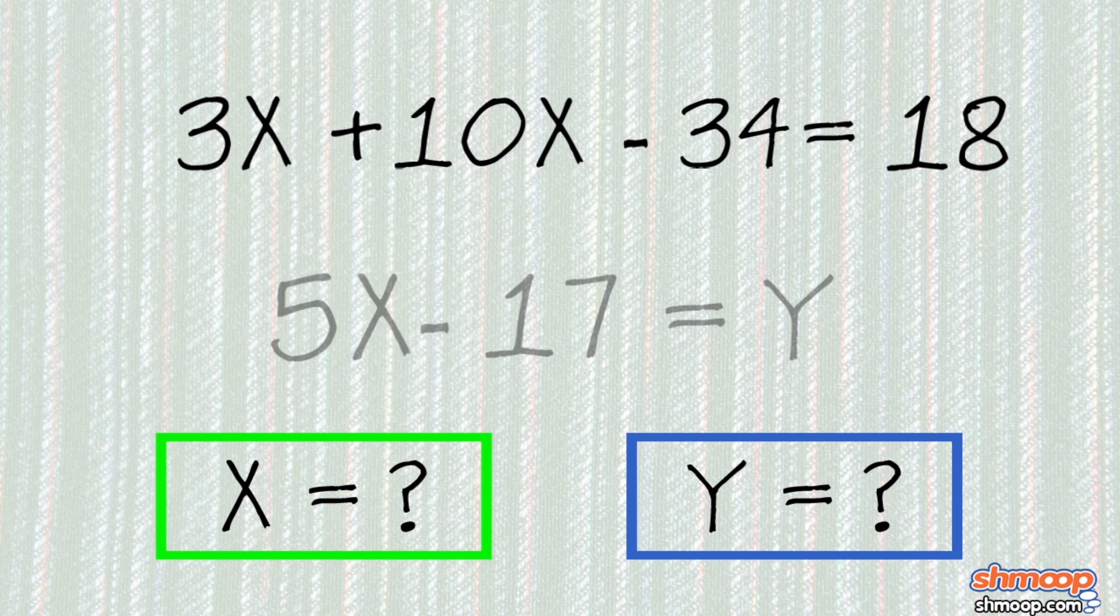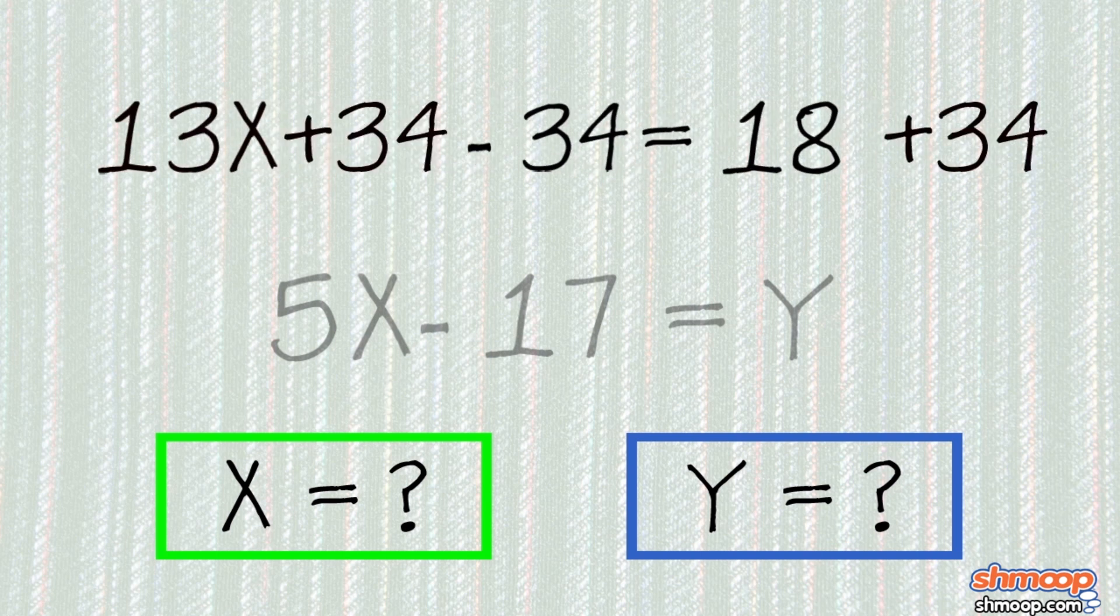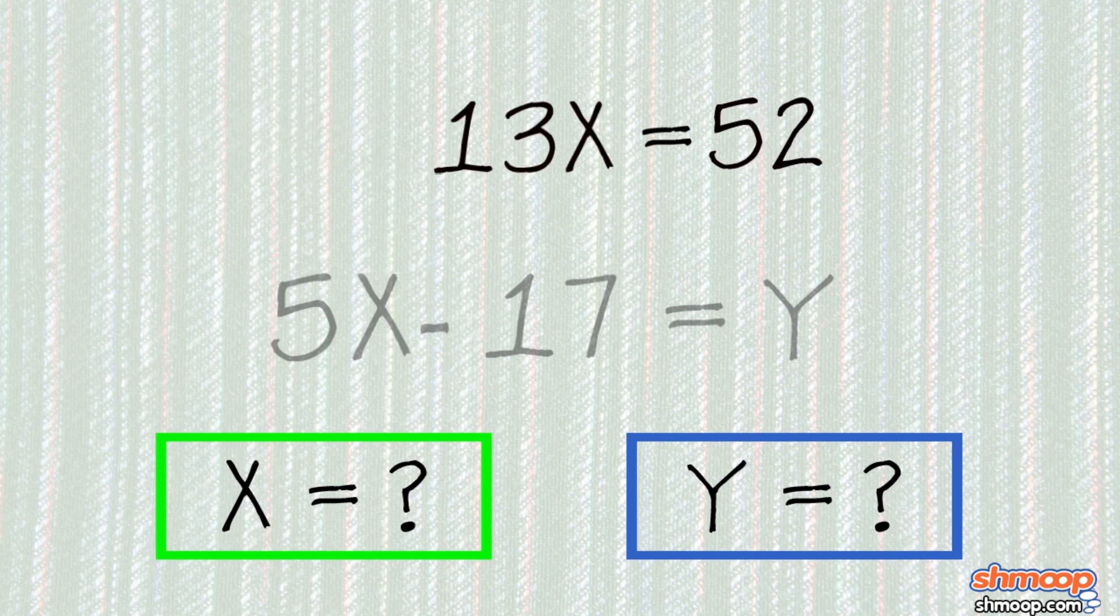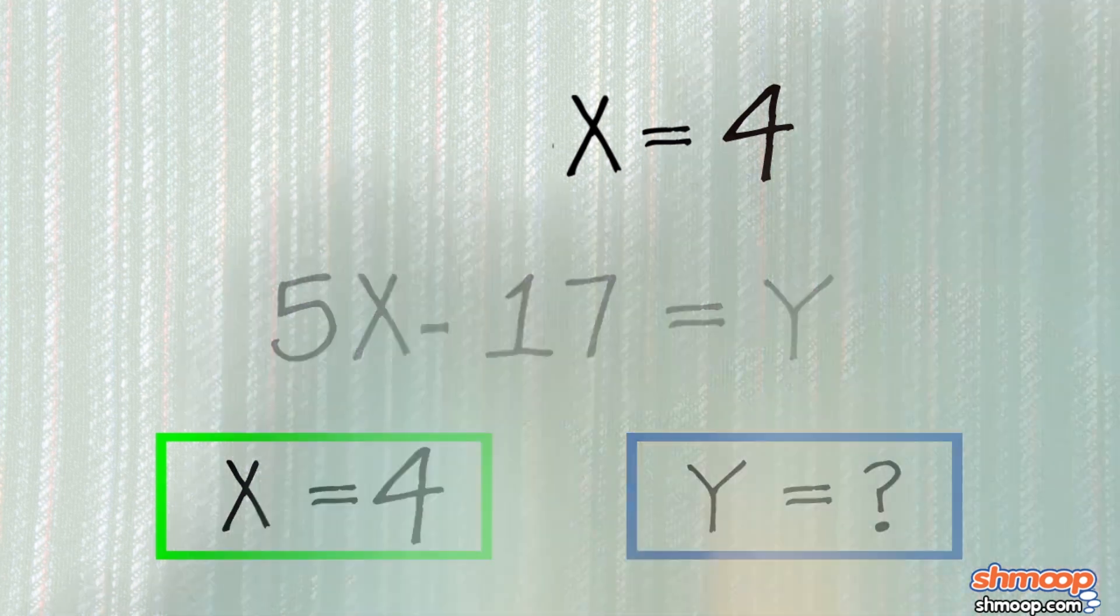Our 3x and 10x total 13x, and if we add 34 to both sides, we get 13x equals 52. Divide both sides by 13, and x equals 4. Nice easy number.